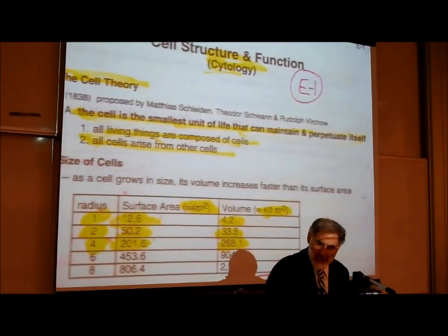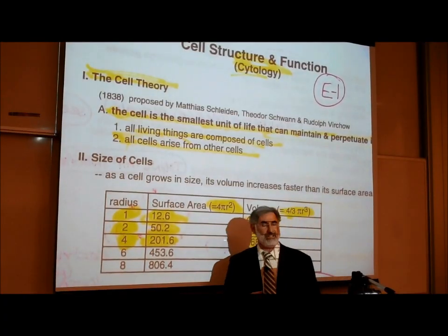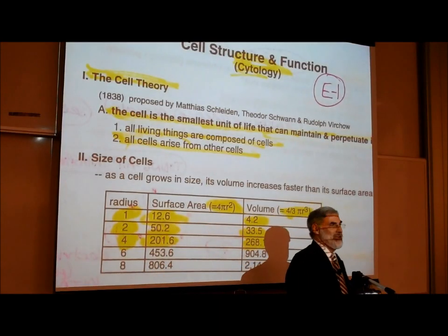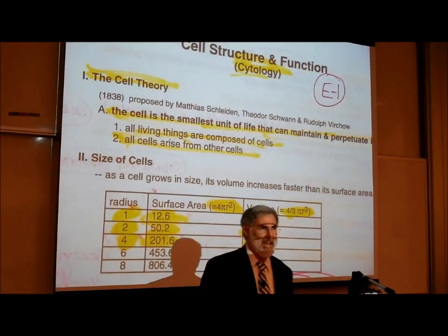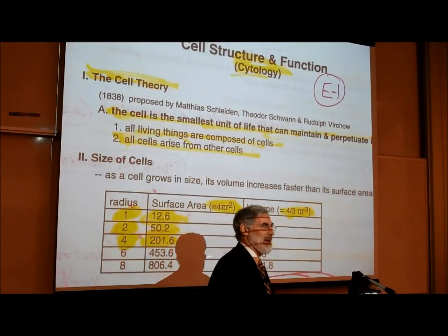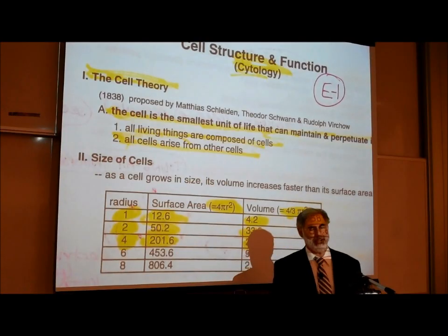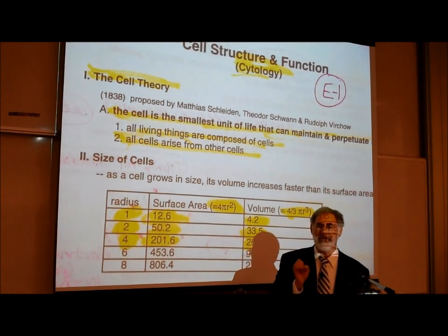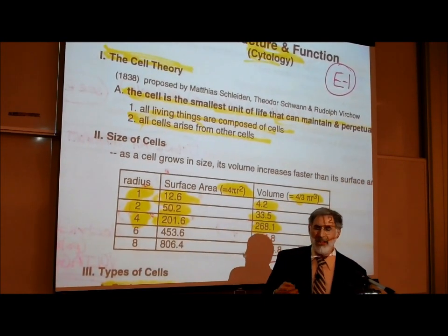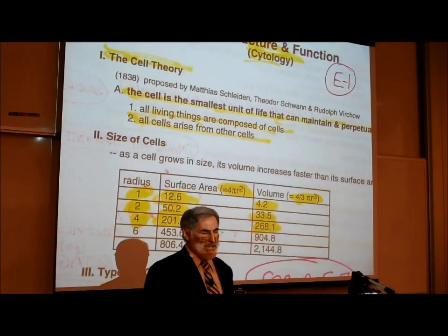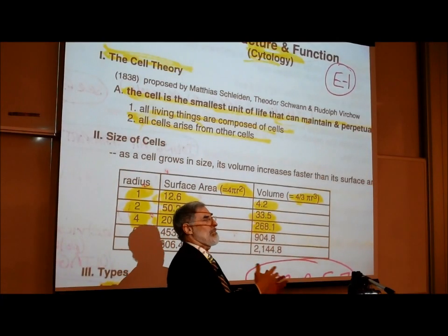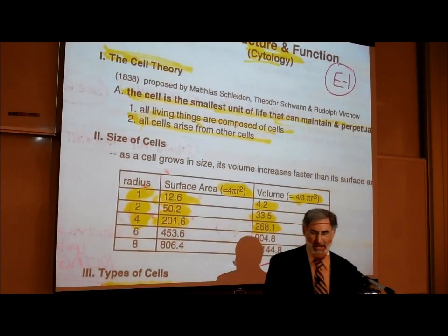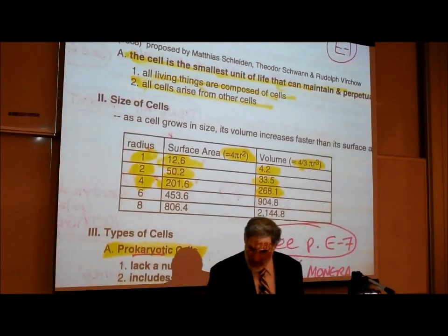Last class meeting on Monday, we talked about the cell theory, which we first mentioned back on page A2. We said that the cell is the basic unit of life. The question we left off with on Monday is: why are cells so small? Cells do grow bigger, but they only grow so big and then they stop. What's stopping cells from growing even larger than they are?